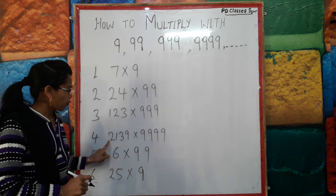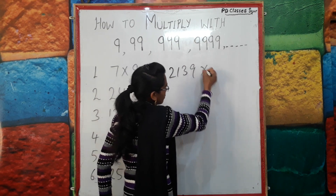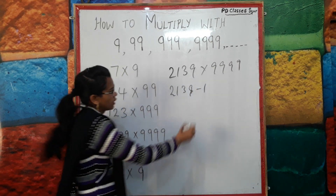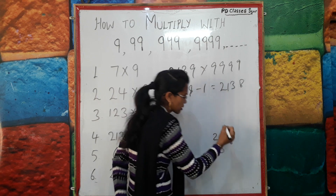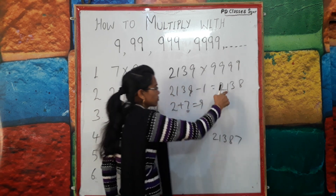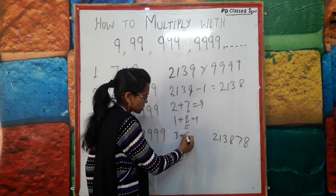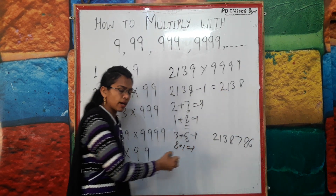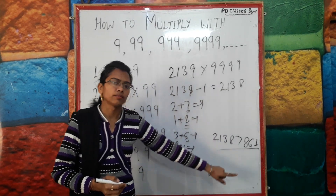Now Pattern 4: a four-digit number multiplied by 9999. For example, 2139 × 9999. Same procedure: 2139 minus 1 = 2138. The first four digits of the answer are 2138. Now take each digit and find its complement to 9: digit 2 → add 7, digit 1 → add 8, digit 3 → add 6, digit 8 → add 1. So the remaining digits are 7, 8, 6, 1. The final answer is 21387861.